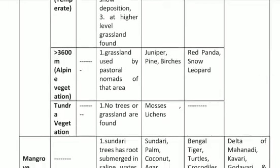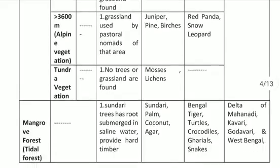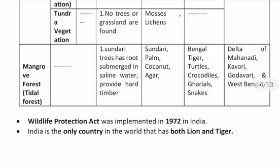The third type of Himalayan forest is found at a height of 3600 meters and above. These are also called Alpine vegetation. They mostly consist of grasslands used by coastal nomads of the areas. Main trees here include juniper and birch. Wild animals found here include red panda and snow leopard.